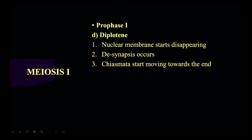Now let's enter into the diplotene stage, also called diplonema or double thread stage. Here the nuclear membrane starts disappearing. Then desynapsis occurs — the synaptonemal complex that held two homologous chromosomes in contact is going to get broken or dissolved.